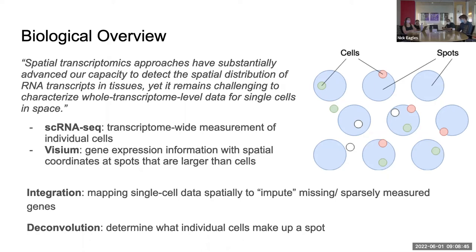That's the deconvolution side. Another task is mapping single cell data spatially onto these spots, which can be used to impute missing or sparsely measured genes in the spatial data. There are a bunch of new methods developed to do both of those things — integration and deconvolution — and it's a really new field we're actively exploring.